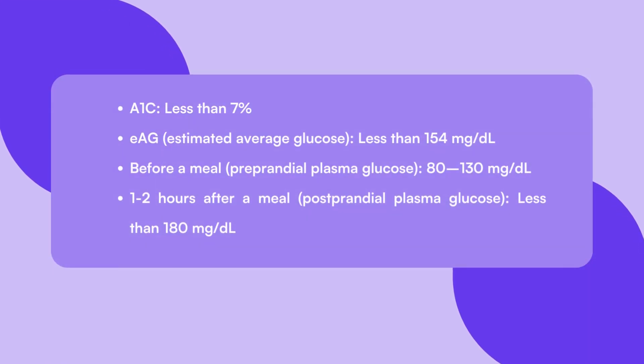According to the ADA, the normal blood sugar ranges are: A1c less than 7%; EAG (estimated average glucose) less than 154 units; before a meal, 80 to 130 units; and 1 to 2 hours after a meal, less than 180 units.